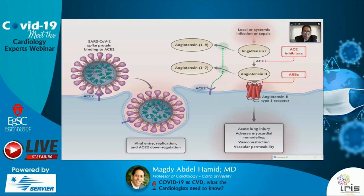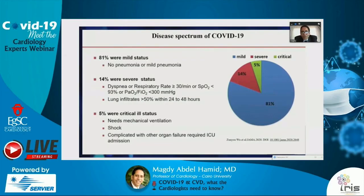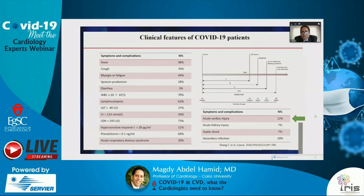The spectrum of COVID-19: 81% of cases are mild with no pneumonia or mild pneumonia. However, 14% of patients present with shortness of breath with a respiratory rate above 30 per minute, oxygen saturation below 93%, and lung infiltrates more than 50% within one to two days. And 5% of patients have a critical situation in the form of shock, need for mechanical ventilation, and ultimately multi-organ failure, which is responsible for increased mortality.